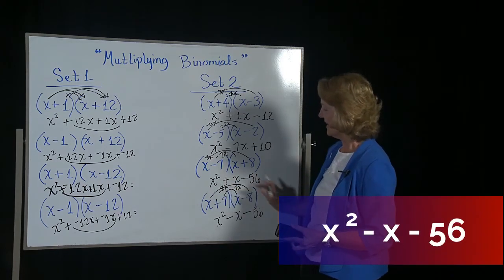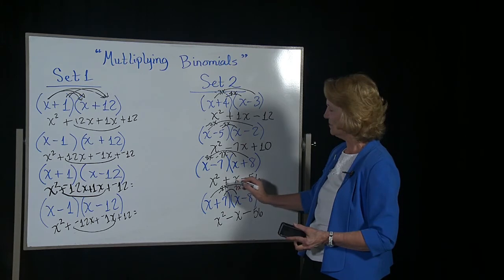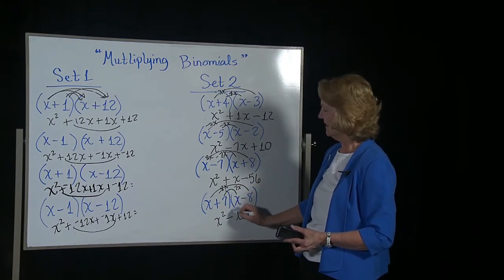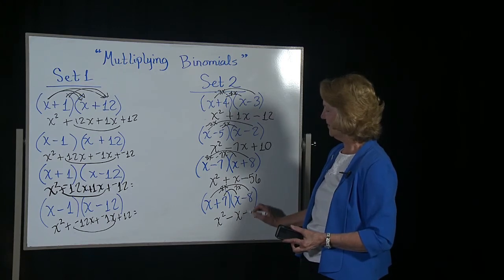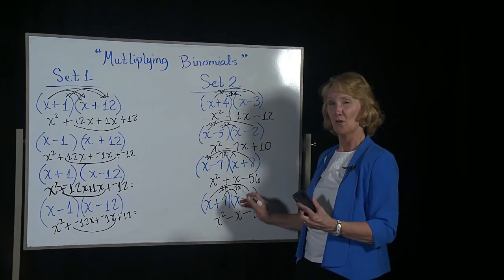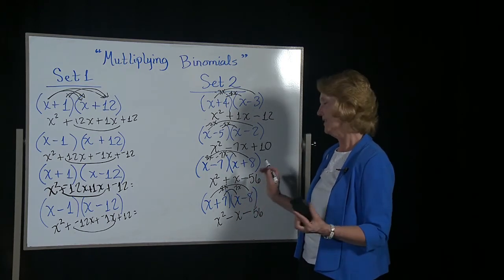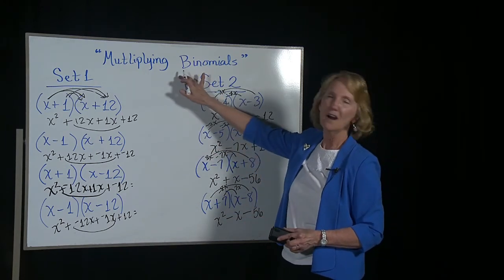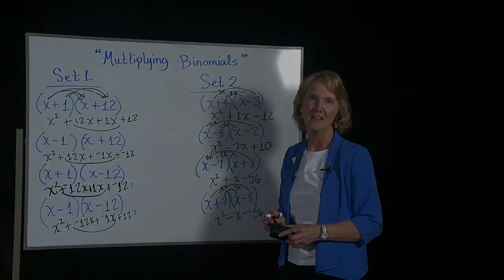7 times negative 8 becomes negative 56. So the answers were much alike, except this one was positive because our bigger amount was positive. This one, the middle term, became negative because our bigger absolute value was negative. Now you give it a try. Set 1 and set 2 on multiplying binomials. I hope you enjoy the challenge.